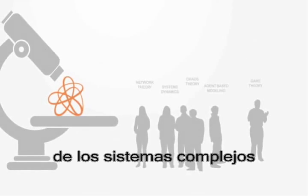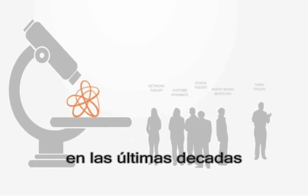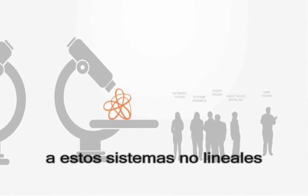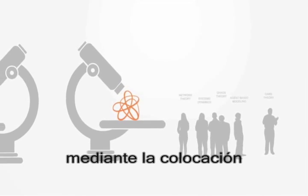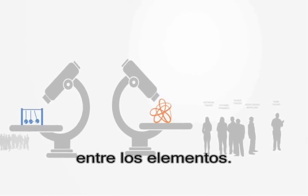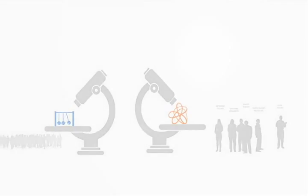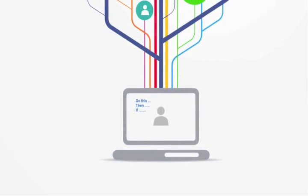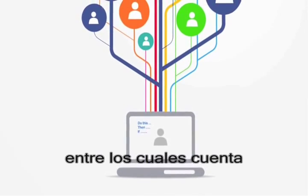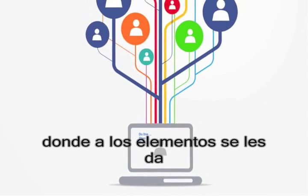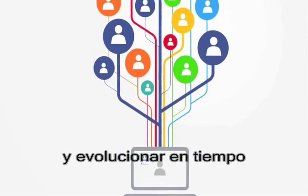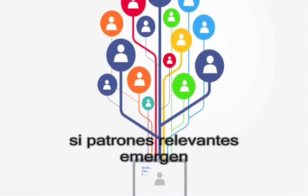Thus the area of complex systems has arisen over the past few decades as an alternative paradigm within science and engineering to deal with these non-linear systems, by placing a greater emphasis upon the connections and relations between the elements. It currently represents a broad and diverse set of methods, primarily among which is the use of computational modelling, where elements are given a simple set of rules that govern their behaviour and are left to interact and evolve over time, to see if relevant patterns will emerge.